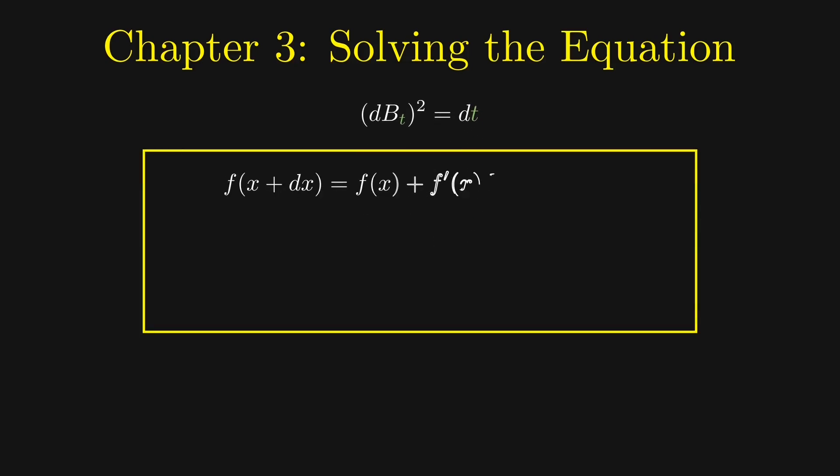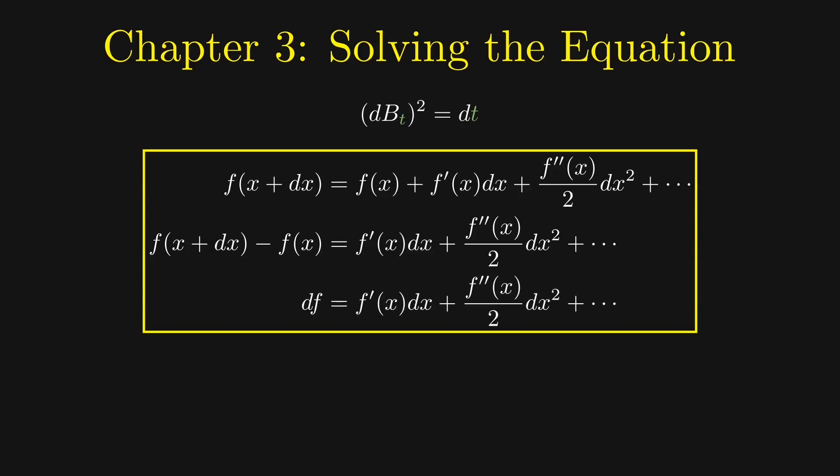In calculus, we have the famous Taylor series expansion. When we expand f of x plus dx around x, we get this infinite sum. But usually we can ignore the higher powers of dx and only take the first term here. However, in stochastic differential equations, we must include the square term as we have two different levels of smallness.